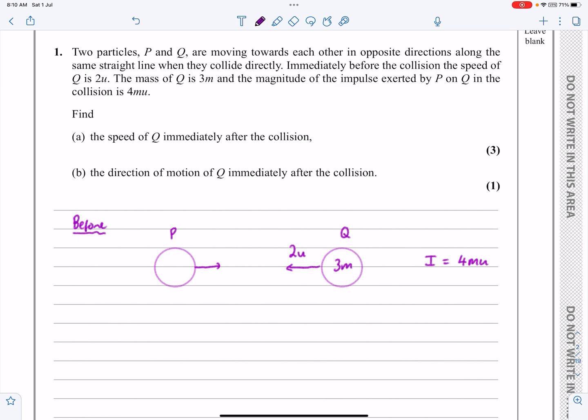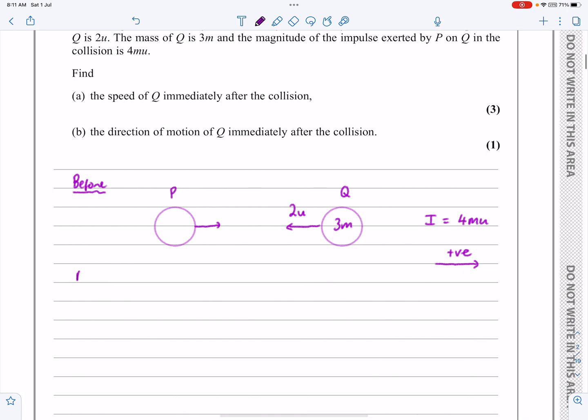And it's the magnitude of the impulse exerted by P on Q. So if it's by P on Q, you don't have to, but I'm going to take that way as positive, given the information they've given me there. So there's the before diagram.